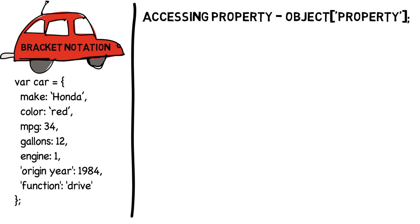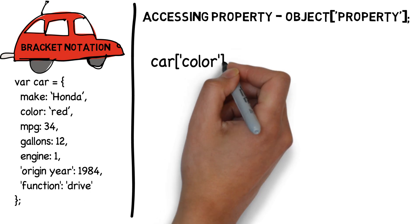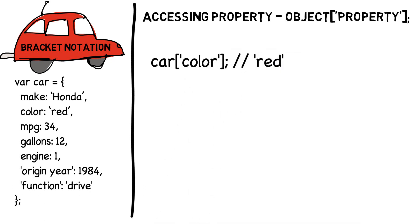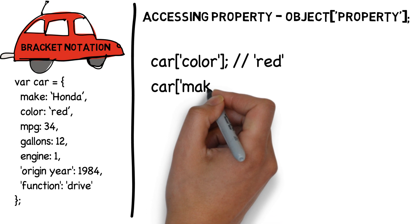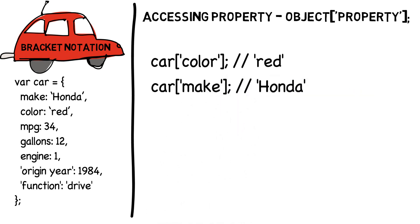Suppose we want to access the color and make of our car again. We write object car, opening square bracket, opening single or double quote, the property color, then a closed single or double quote, then a closed square bracket to get red. We write object car, opening square bracket, opening single or double quote, the property make, then a closed quote and a closed square bracket to get Honda.